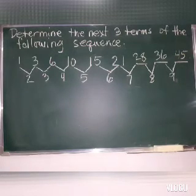Okay. So, we have now 28, 36, and 45. So, easy, right? So, that's how to get the 3 terms of a sequence.